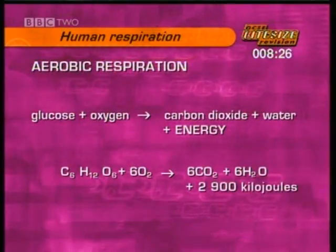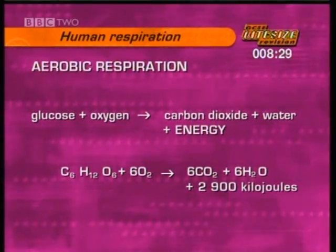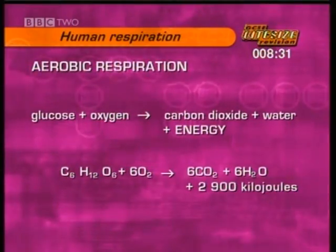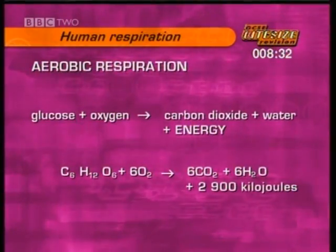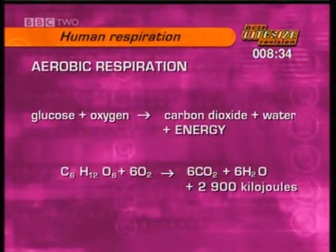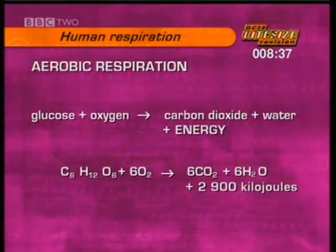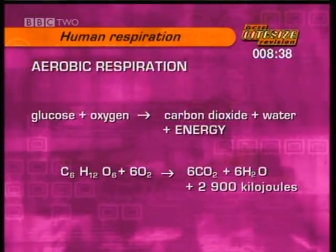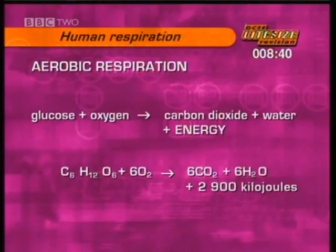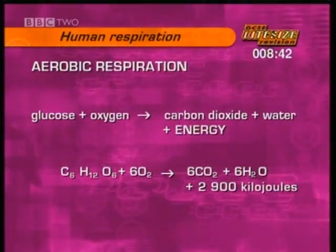The word equation for aerobic respiration is: glucose plus oxygen gives carbon dioxide plus water and energy. The balanced chemical equation is C6H12O6 (glucose) plus 6O2 (oxygen) gives 6CO2 (carbon dioxide) plus 6H2O (water) and 2900 kilojoules of energy per mole.